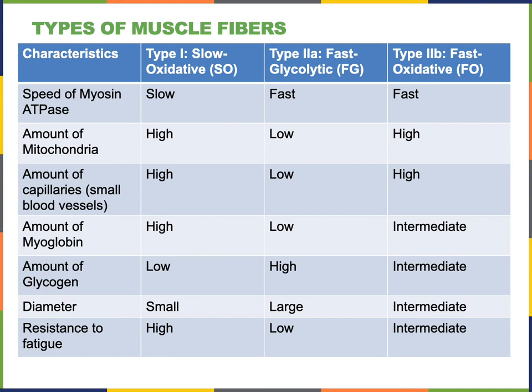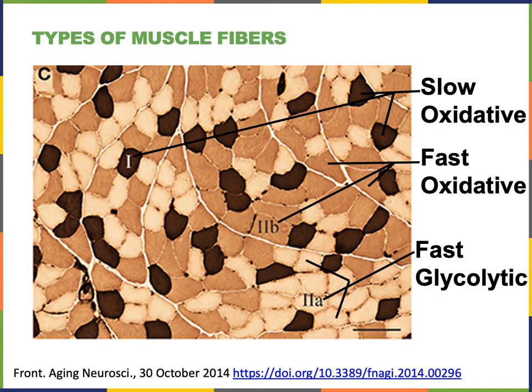The fast oxidative fibers are intermediate between slow oxidative and fast glycolytic, having intermediate resistance to fatigue. They can produce more rapid contractions, but cannot sustain those contractions as long as slow oxidative fibers. In histology images of skeletal muscle tissue, slow oxidative fibers appear darker due to high myoglobin concentration, fast oxidative fibers appear lighter but still reddish, and fast glycolytic fibers appear white due to very low myoglobin.